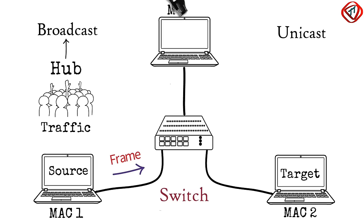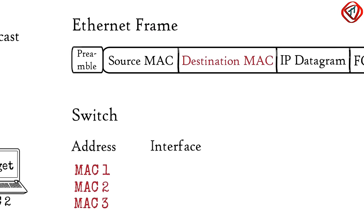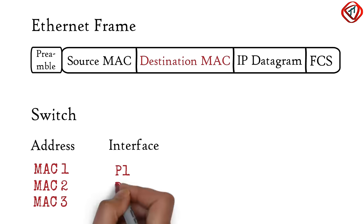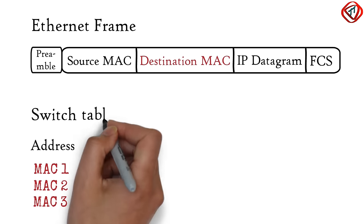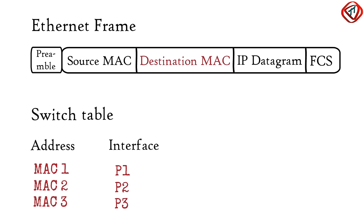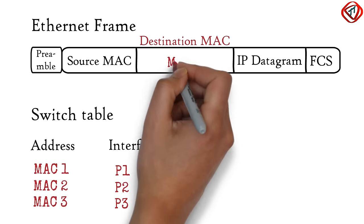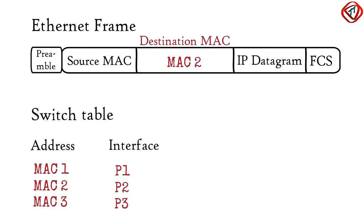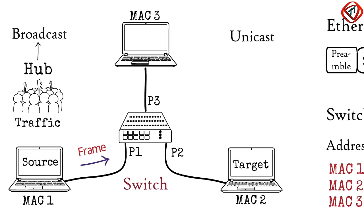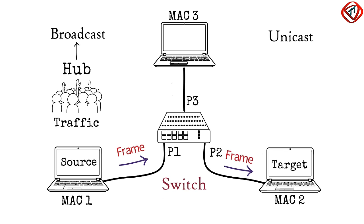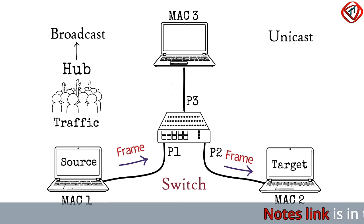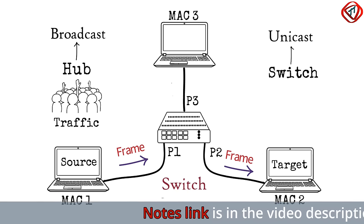Every computer has a unique MAC address. A switch stores the MAC addresses of devices connected to its ports in a switch table. Since the data frame it receives has a destination MAC address, and the switch knows which port that device is connected to, the switch forwards the frame to that port only. Hence, instead of broadcasting, the switch unicasts the frame.